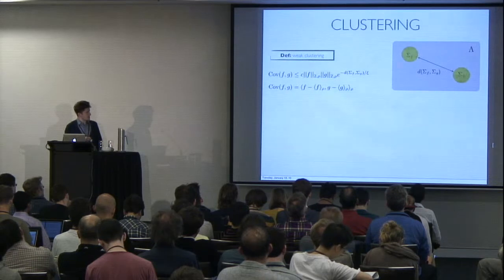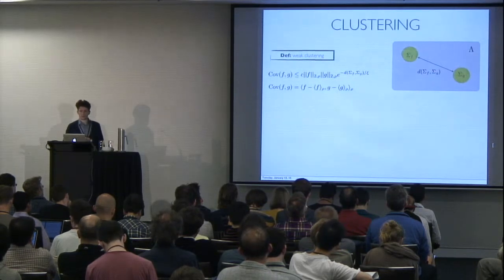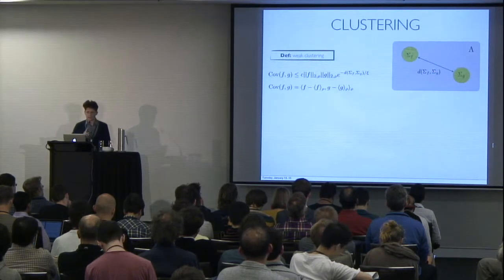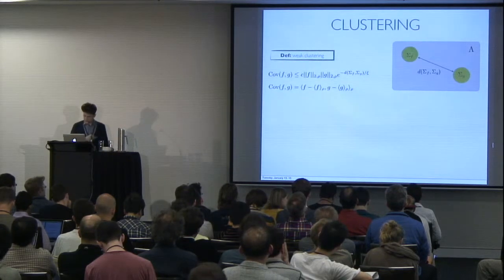we mean that the covariance between the two observables, f and g, decays exponentially with the distance between f and g. This can be relaxed, but for simplicity we just assume this as our definition.